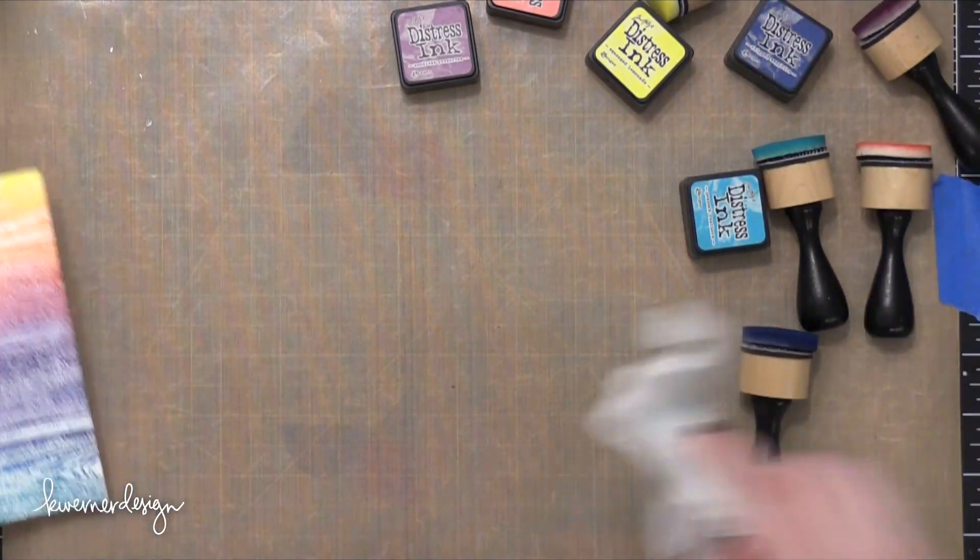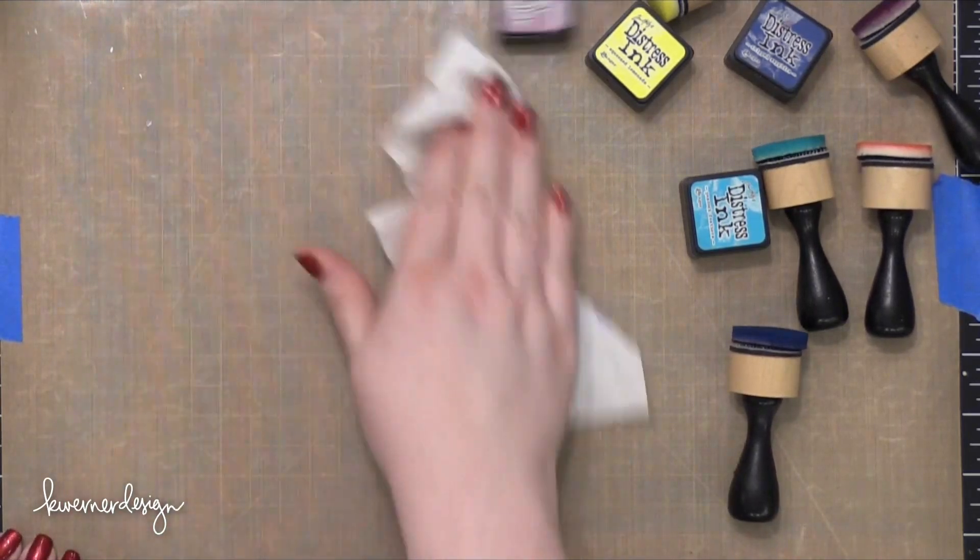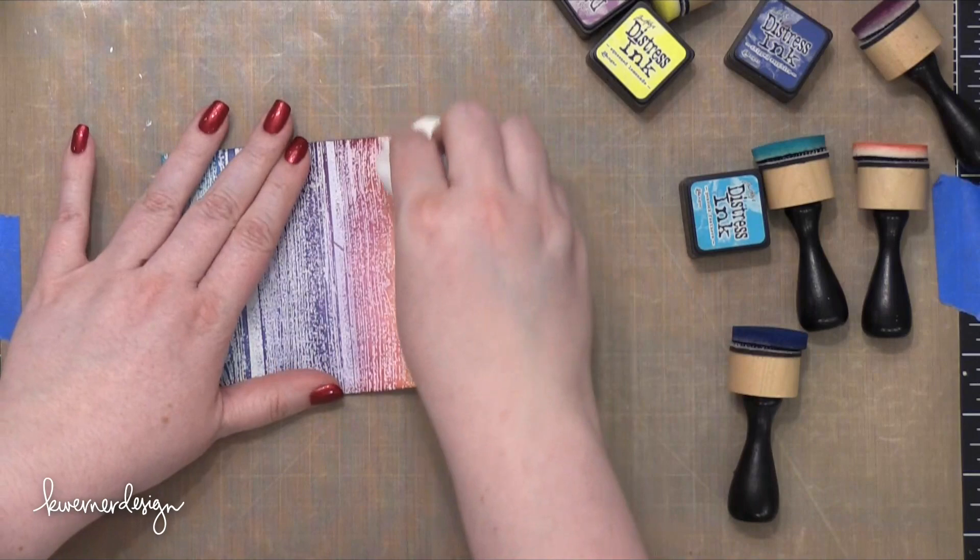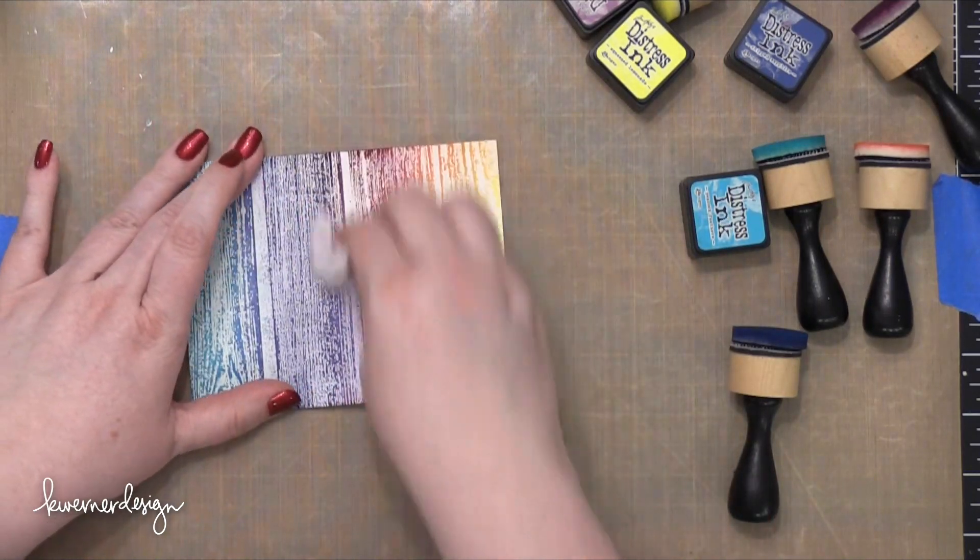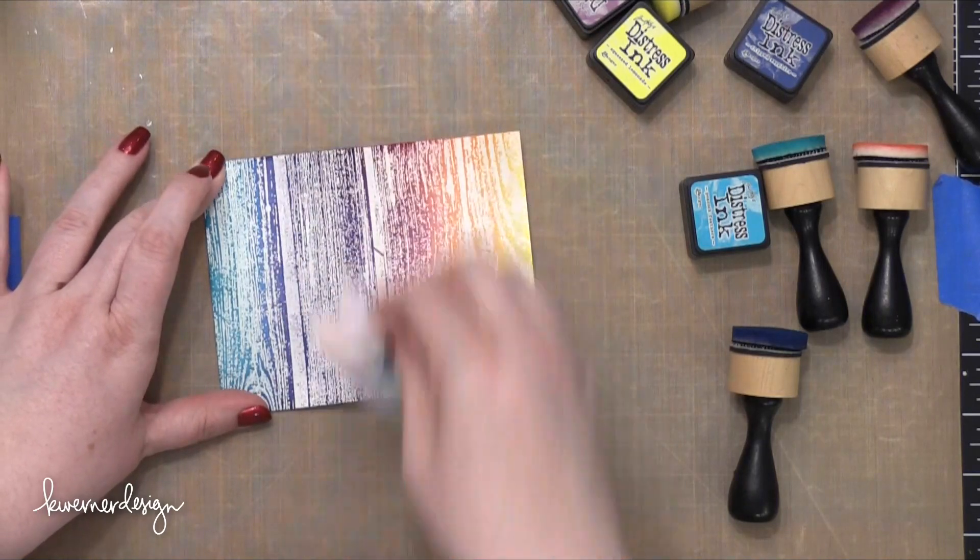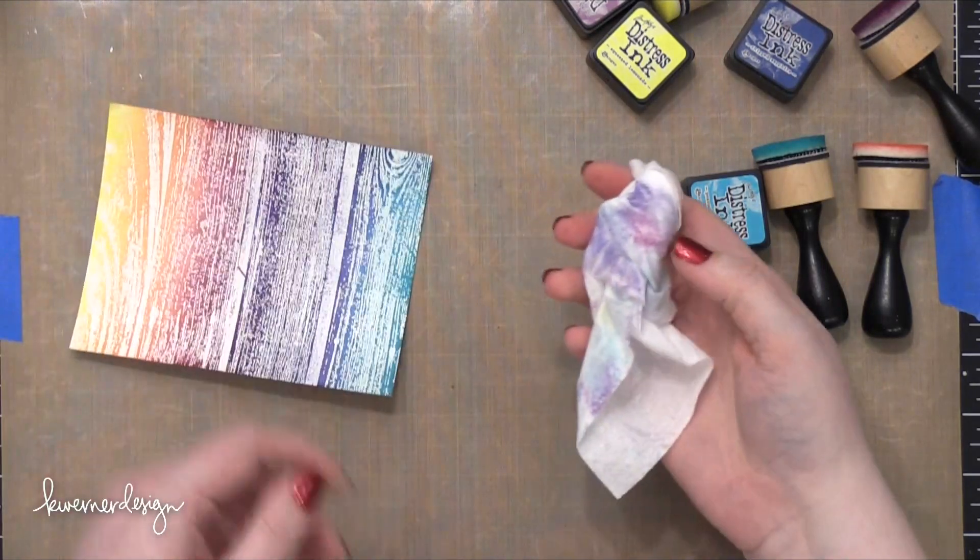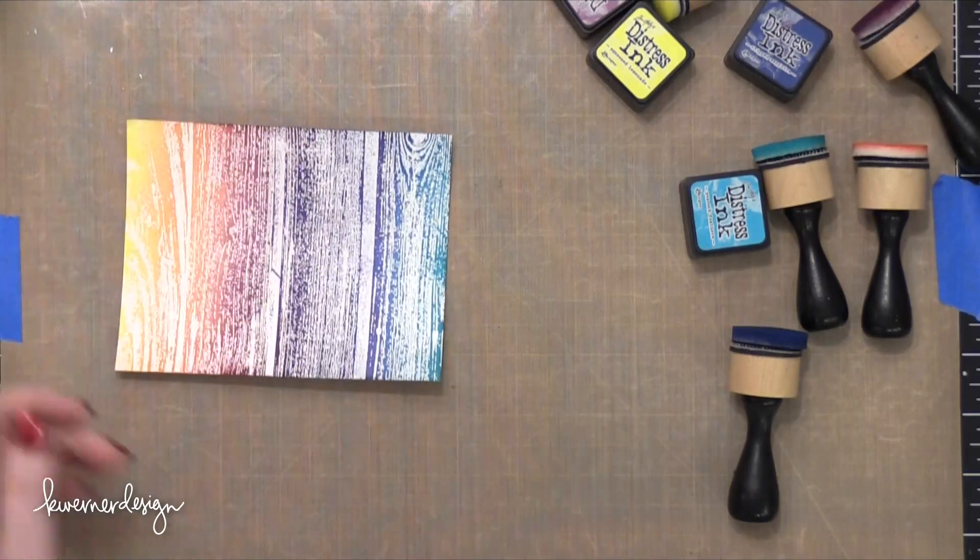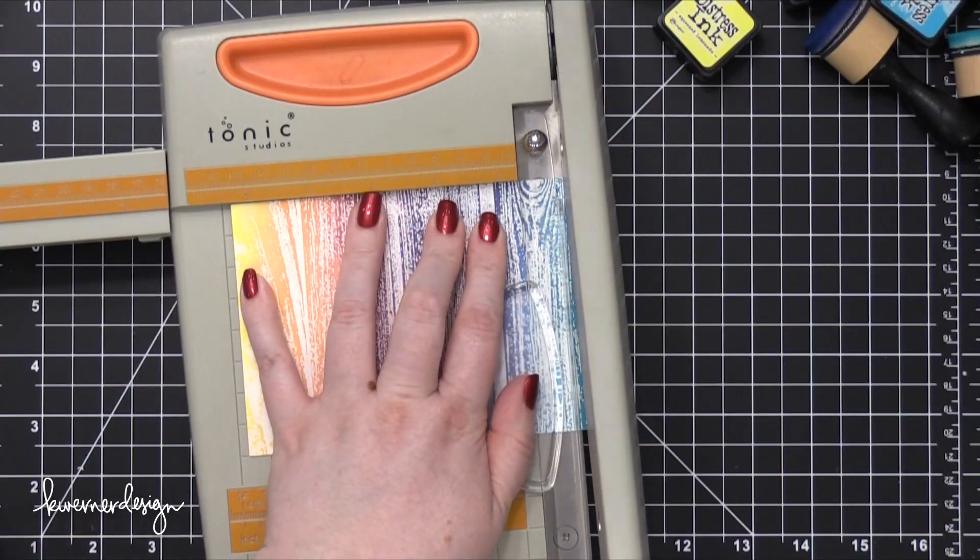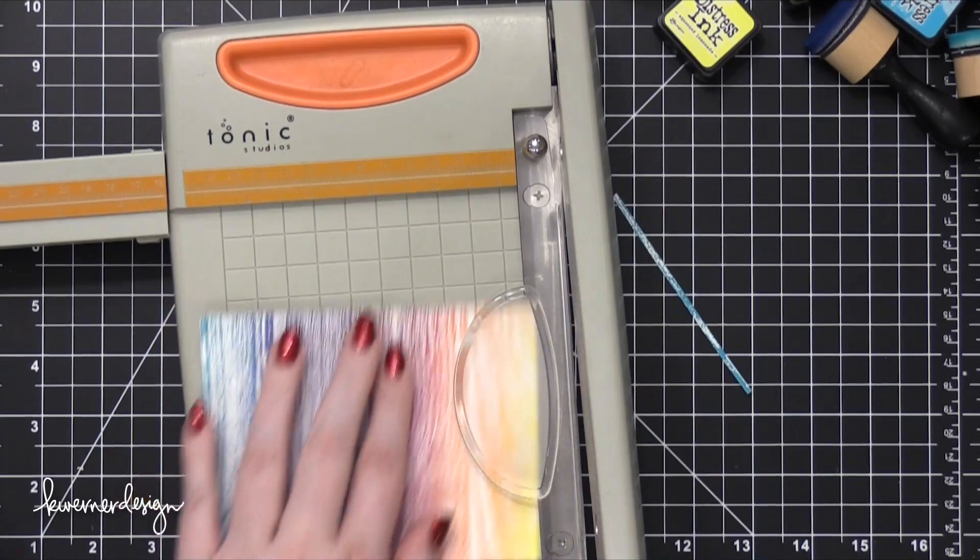Then after all that was done I cleaned up my craft sheet once again with just a baby wipe and then I just moved that baby wipe to a clean section and wiped over that clear embossing powder and that just takes off any of that ink that was sitting on top of the embossing powder. It reveals that white underneath and it gives a really good contrast between the white embossed areas and also the color blended areas.